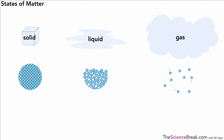Hello, today we're going to look at states of matter and how substances can change between solid, liquid and gas. The first thing here we have is the particles shown for solids, liquids and gases and how they are arranged.